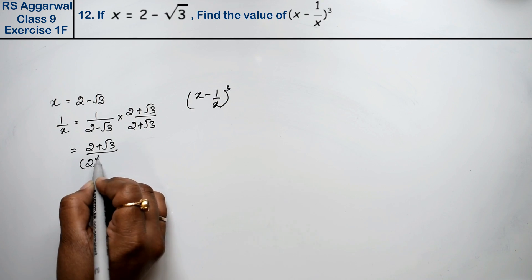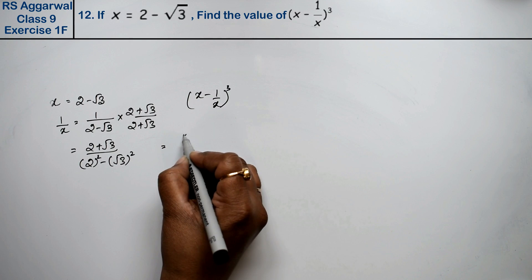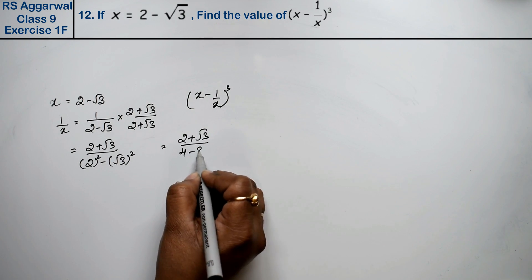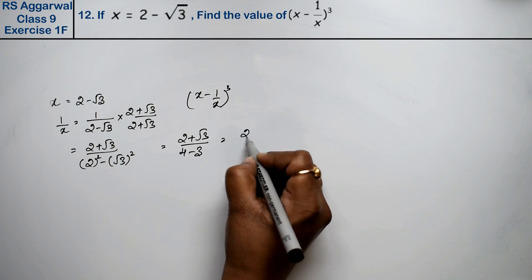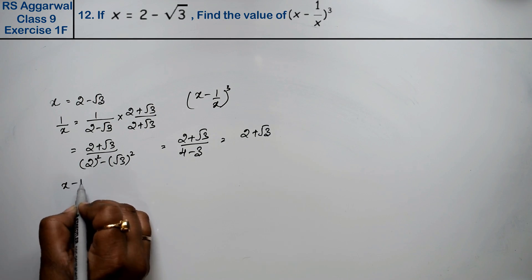The denominator becomes 2 square minus root 3 square. This gives us 2 plus root 3 upon 4 minus 3, so the answer is 2 plus root 3.